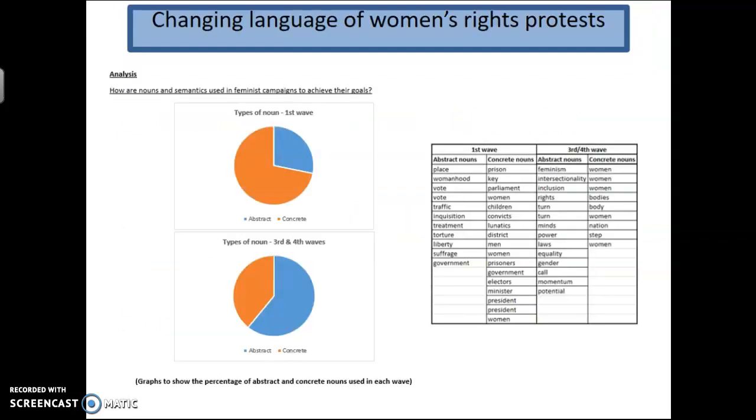This is what it will look like in practice. And this is from one of this year's cohort. You've seen her introduction and the methodology before. It's about the change in language of women's rights protests. And she began with this. There you can see here analysis. This is the opening to her analysis. And she phrases it as a question. The first part of her analysis is this: How are nouns and semantics used in feminist campaigns to achieve their goals? Then she has a really clear pie chart of the concrete nouns versus abstract nouns in the first wave of feminism, and then a second pie chart showing the opposite in the third and fourth waves of feminism.